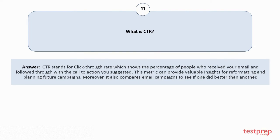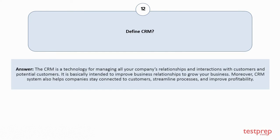Question number twelve: Define CRM. CRM is a technology for managing all your company's relationships and interactions with customers and potential customers. It is basically intended to improve business relationships to grow your business. Moreover, the CRM system also helps companies stay connected to customers, streamline processes, and improve profitability.